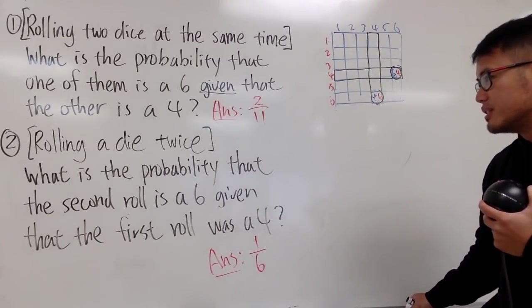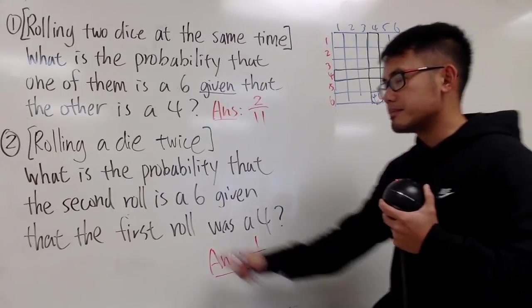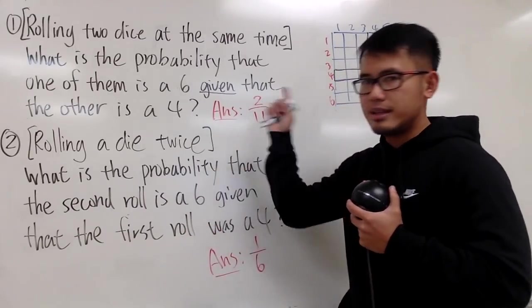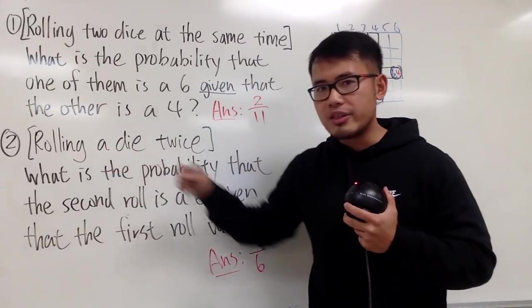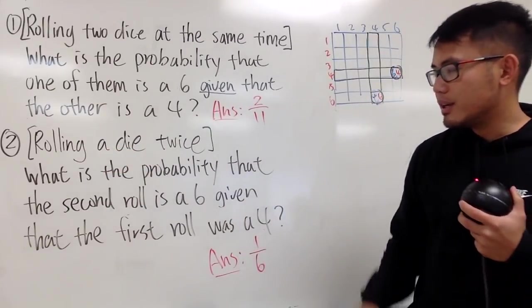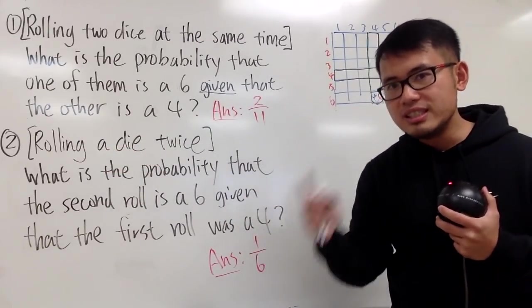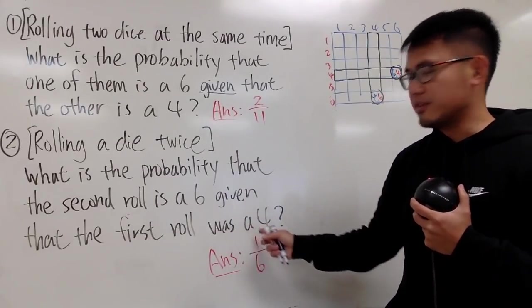Okay, so this is good. Now, what's the difference between this one and that one? This right here is, of course, we only have one die and we roll twice. When we roll the first time, we see that the result was a 4.